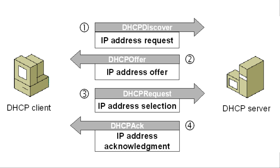When you first connect a device to a network, it usually gets an IP address automatically because it's using DHCP — the Dynamic Host Configuration Protocol. This uses UDP port 67 and UDP port 68 to communicate with your DHCP server, which is usually built into your router. The server leases an IP address for a certain time; when it expires, the DHCP server pings the device to ask if it still needs that address. If the device is still active, the lease is renewed; if not, it's revoked and can be assigned to another device.